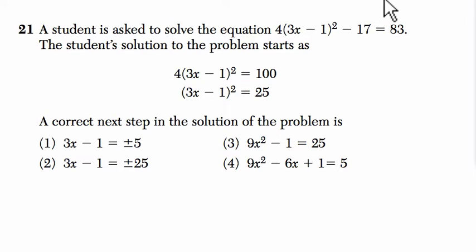Alright, so a student is asked to solve this equation: 4 times 3x minus 1 squared minus 17 equals 83. And here's their work. They want to know what the correct next step would be.